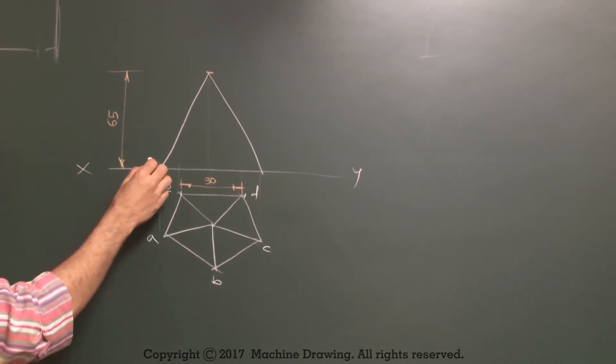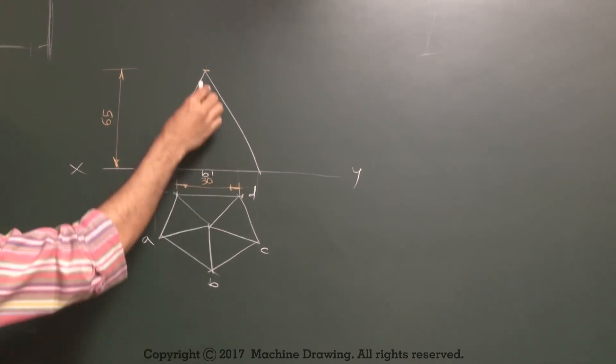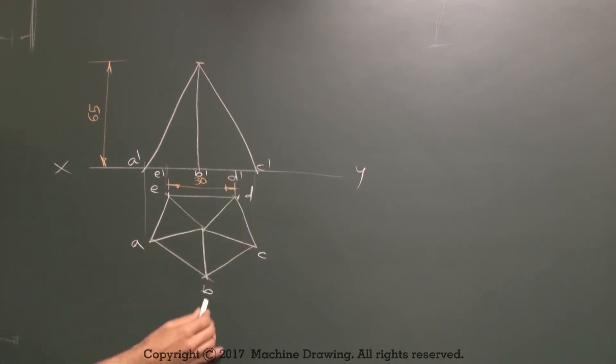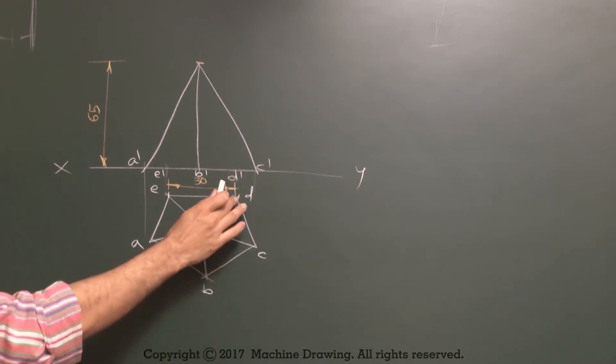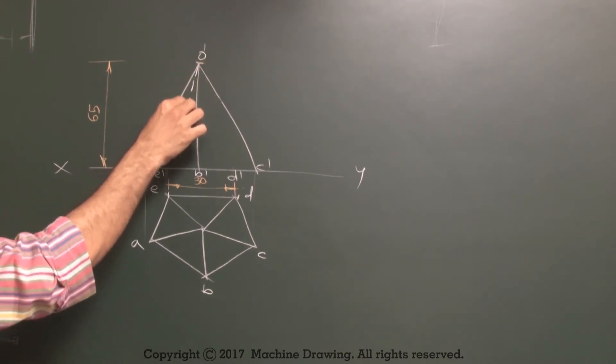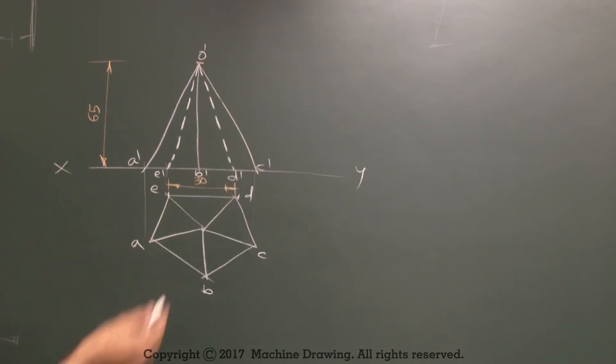Then we will mark this A dash. This is A dash, B dash, C dash and D dash. Now observer will see from this side, so D and E will be dotted. So O dash to D dash and O dash to E dash is dotted. Now after this they have set a horizontal plane which is 25mm above the base.